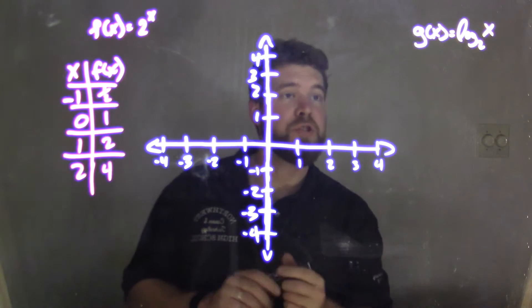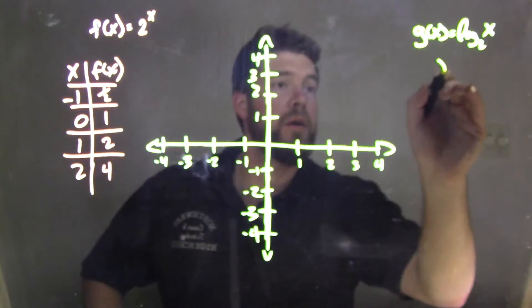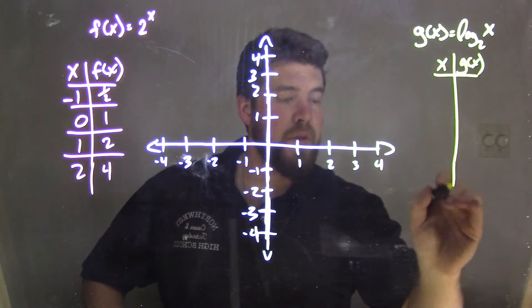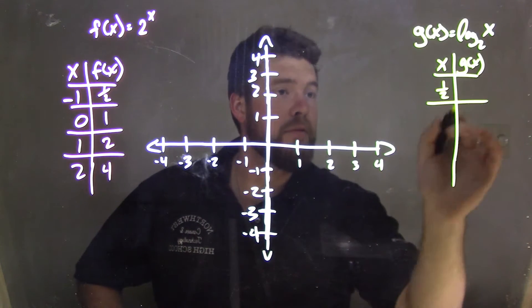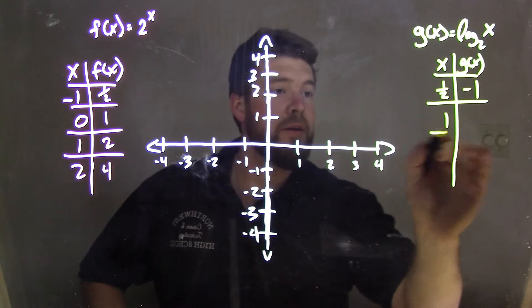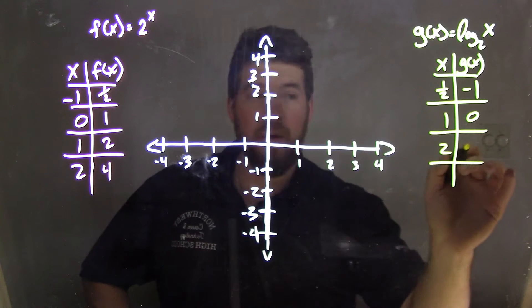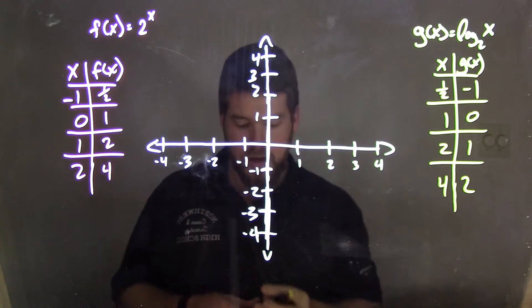If I take g(x), if I graph g(x), we'll get a table here. I have x and g(x). These values, if x is 1/2, we have -1. If x is 1, g(x) is 0. If x is 2, we have 1. And if x is 4, we have 2. Now,